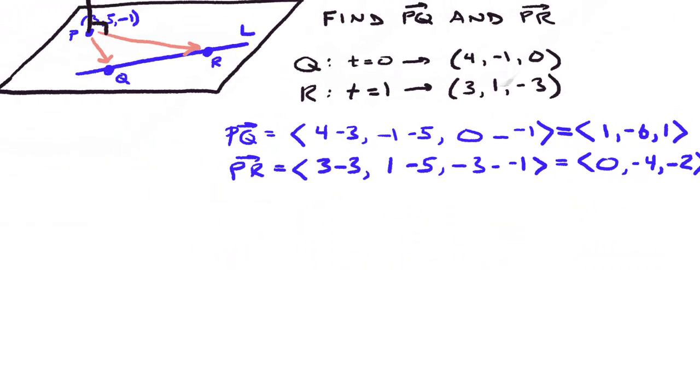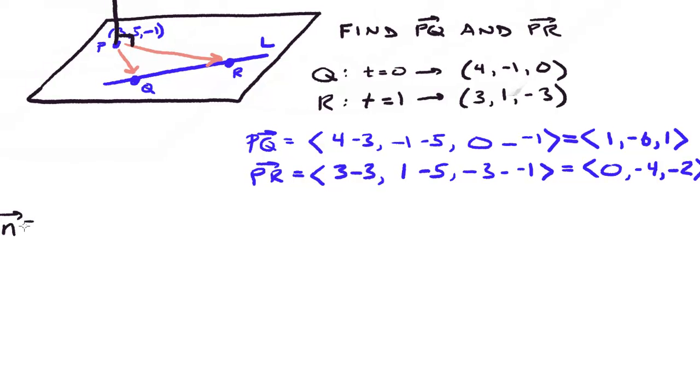Okay, so from here we can find the normal vector. And to do that, we're going to find the cross product between PQ and PR. Okay, so setting this up, it's going to be the determinant. And the first one's going to be the standard basis vectors, i, j, k. And then the second one will be our PQ, which is <1, -6, 1>. And then PR for the last one, so <0, -4, -2>.